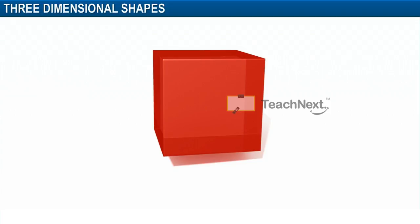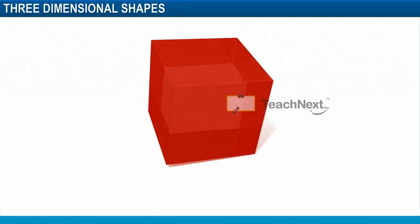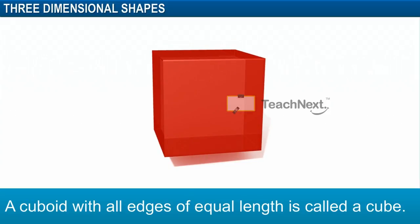Now, look at this cuboid. All its edges are of equal length. Such a cuboid is called a cube.